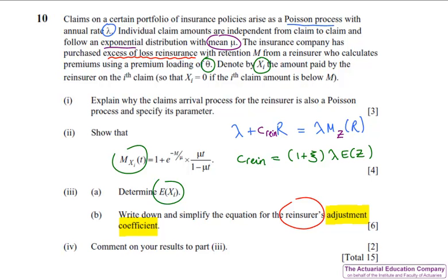And once you've obtained the adjustment coefficient, you're asked to comment on it in part 4. Well, given that we're doing excess of loss reinsurance with retention M, you'll discover that your adjustment coefficient doesn't actually contain M, which is worth mentioning. And so that just leaves part 1 of the question, where you have to explain why the claims arrival for the reinsurer is also a Poisson. Well, the explaining might have caused a bit of confusion, but it shouldn't be too much bother to at least state that the rate will be the original Poisson parameter lambda, times by the probability that claims get referred to the reinsurer.